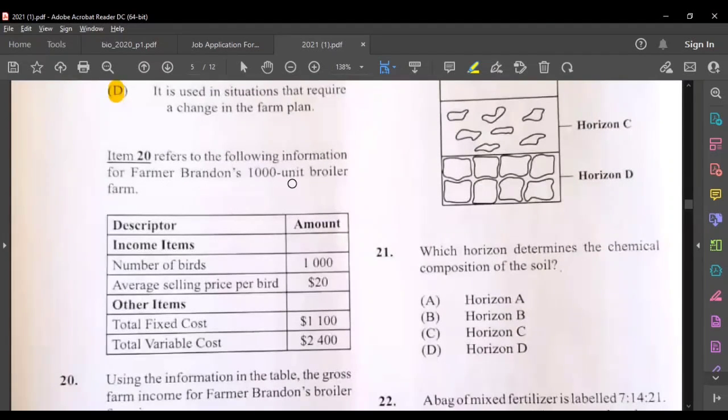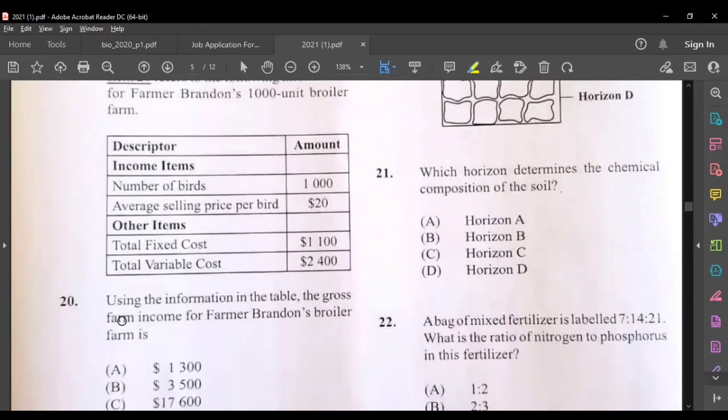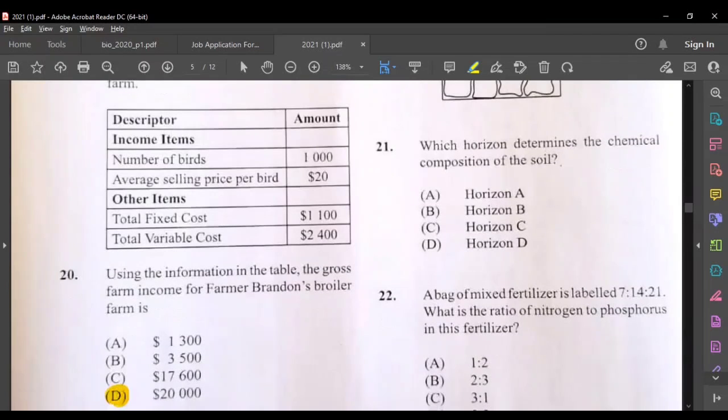Question twenty for the following information for Farmer Brandon's thousand unit broiler farm. Using the information on the table, the gross farm income for Farmer Brandon broiler farm is, all of the income, you add up the total of all of the income here. The number of broilers is one thousand. The average selling price per bird is twenty dollars. Twenty dollars multiplied by one thousand, that should be twenty thousand. And we have the answer here as D.